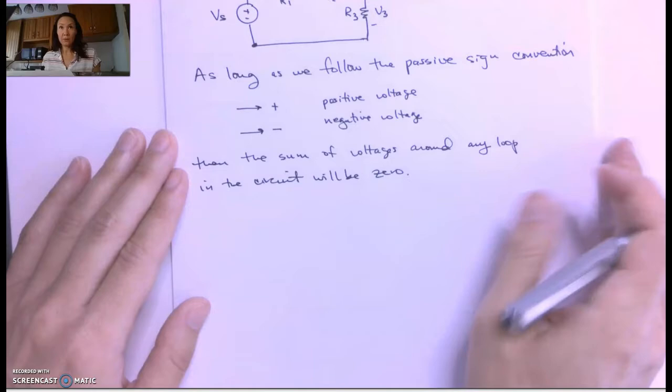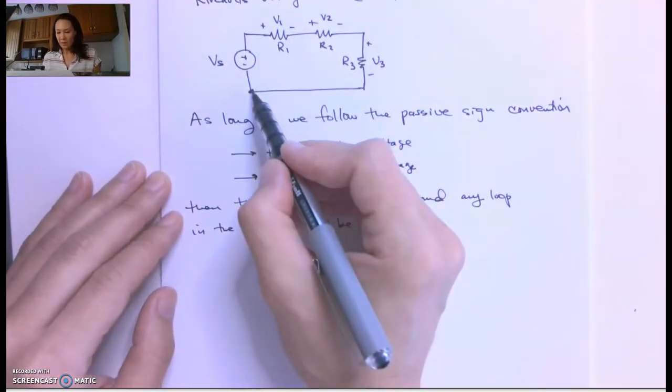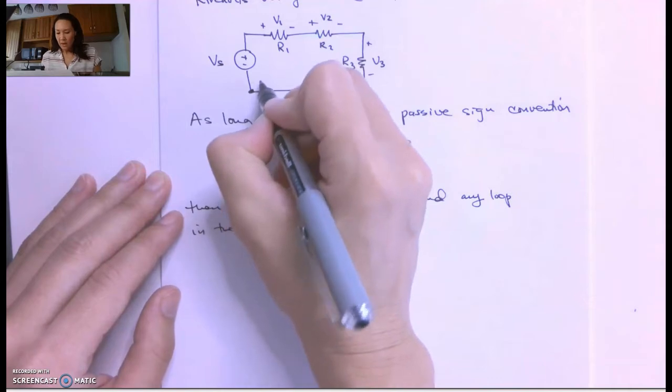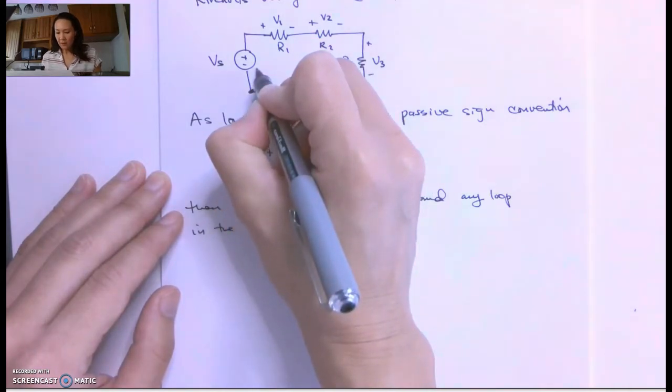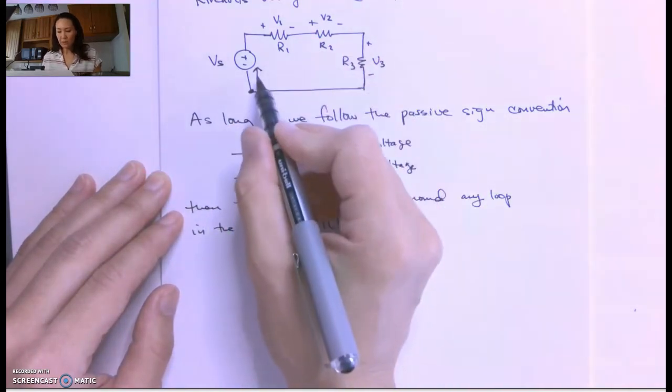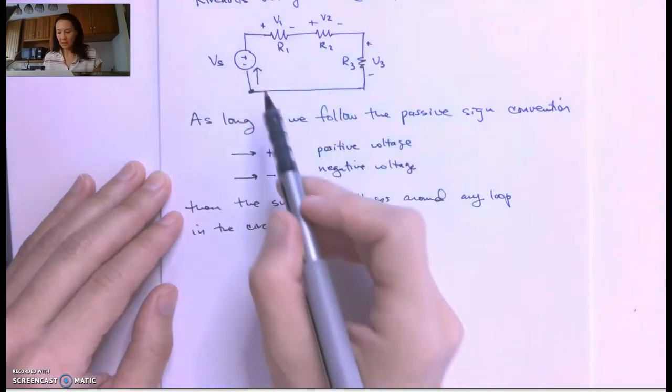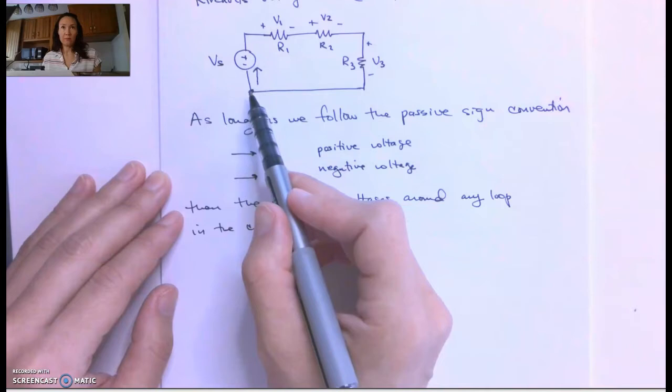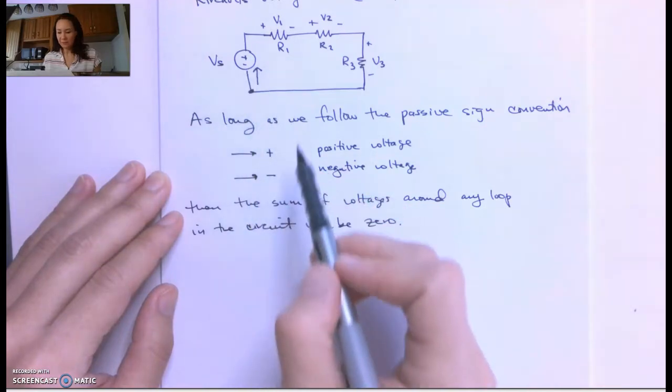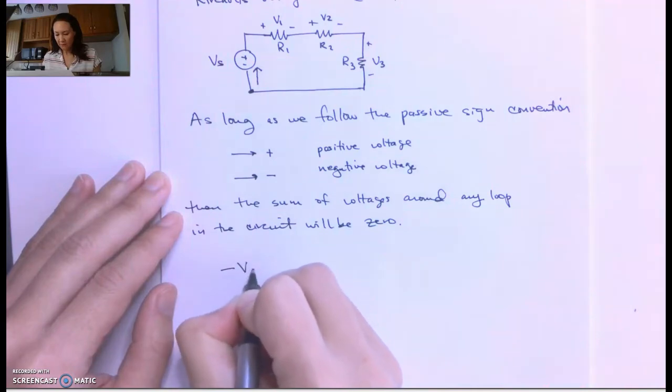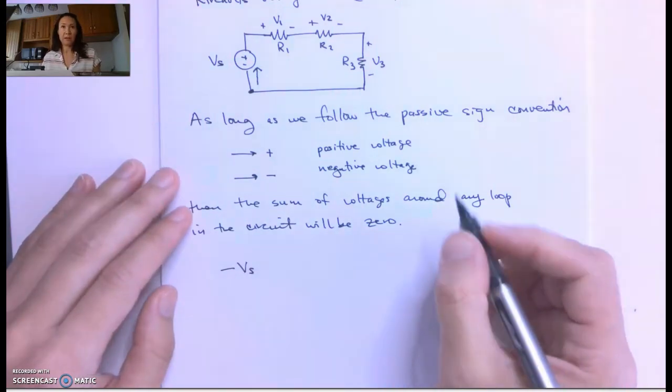So for our example here, if I start at this bottom left-hand corner and walk around the circuit as if I was a current loop, the first circuit element I'm going to encounter is this Vs. Since I'm coming into Vs from the negative side, I follow the passive sign convention, so this is going to be a negative Vs in my list of voltages.